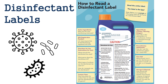Contact time tells you how long the surface has to stay wet with the disinfectant to kill the germs. There are also signal words, which indicate caution, warning, or danger — describing how risky the product is if swallowed, inhaled, or absorbed through the skin. Precautionary statements explain how to use the disinfectant safely and whether PPE is needed. Next is first aid information — what to do if the disinfectant contacts the eyes, mouth, or skin, or if you breathe it in. Finally, storage and disposal covers how the disinfectant should be stored, how to dispose of it, and what to do with the container. These are all critical elements of properly reading a disinfectant label.